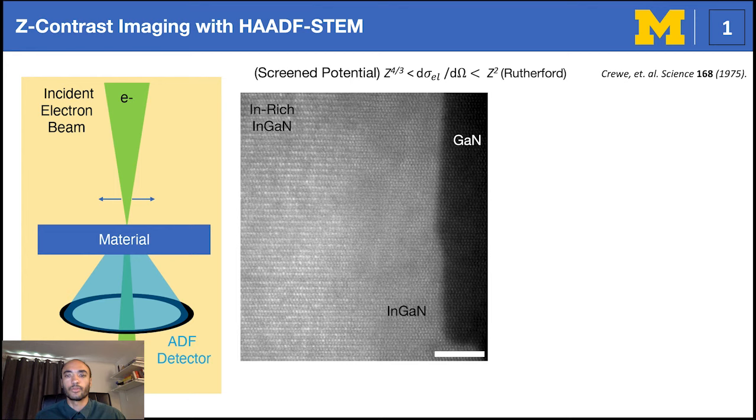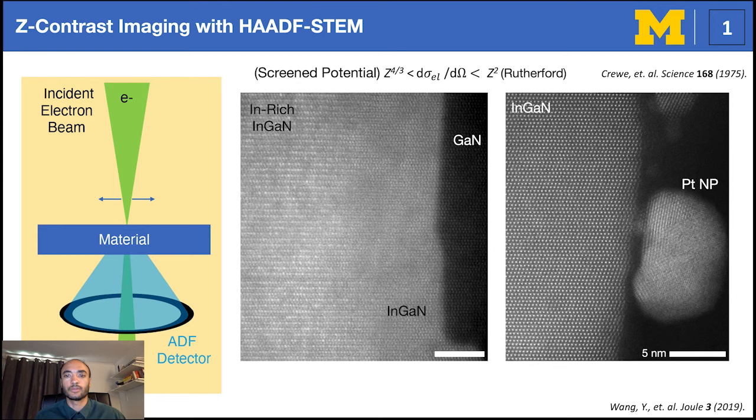On the right, we cannot conclude any difference between the platinum nanoparticle and the InGaN nanowire. Thus, to probe materials chemistry, we turn to spectroscopy.